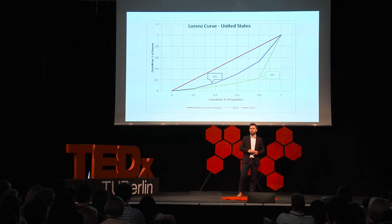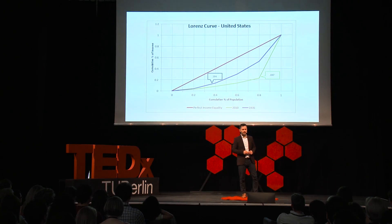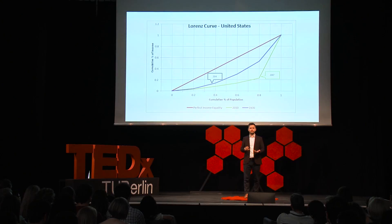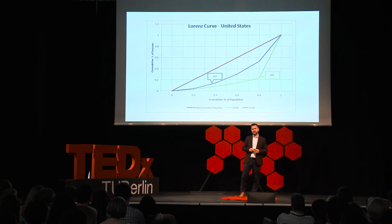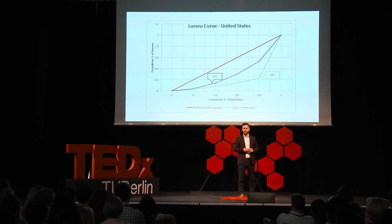Let's look at the United States. This is the Lorenz curve — another way of measuring inequality. The red line represents a dull world where everyone gets the same income. The Goldilocks zone is somewhere between that red line and the rest of the graph. The blue line represents where the United States were in 1970, and the green line is today. That is progress in the wrong direction.